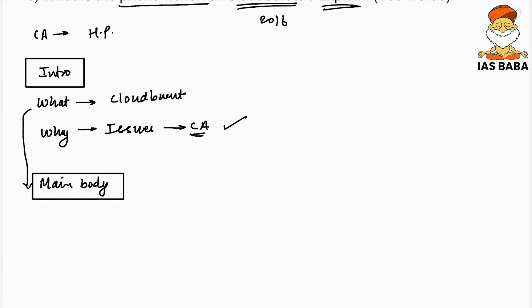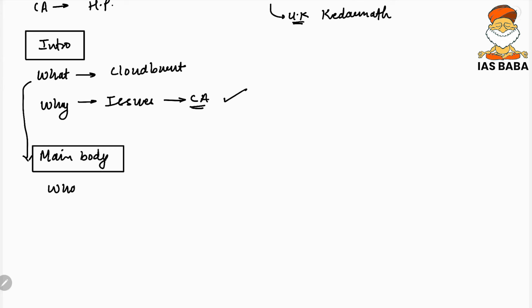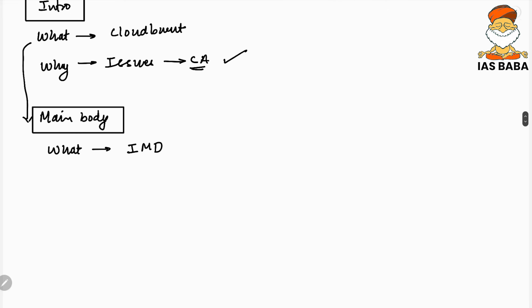If you want to start with the current affairs angle, you can say: 'The recent incident of the cloudburst in Himachal Pradesh, which took a toll on many lives, is a serious issue, and incidents of cloudburst have been increasing — one of the most severe being the 2016 Uttarakhand cloudburst in Kedarnath.' In the main body, since it involves a technical aspect, you may mention that as per the IMD — Indian Meteorological Department — cloudburst is a phenomenon wherein precipitation exceeds 100 millimeters per hour.